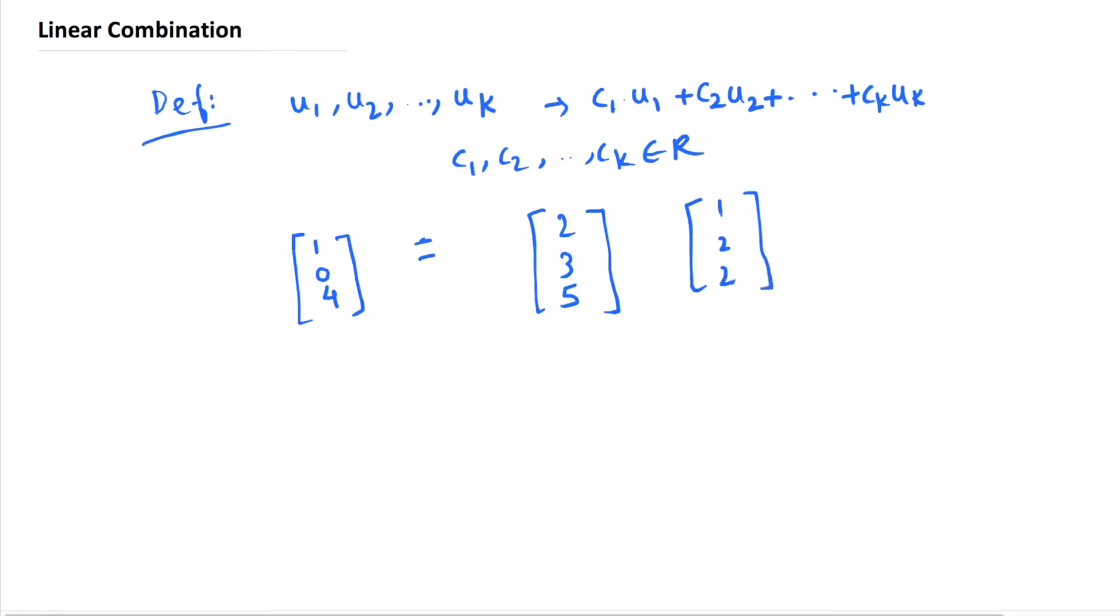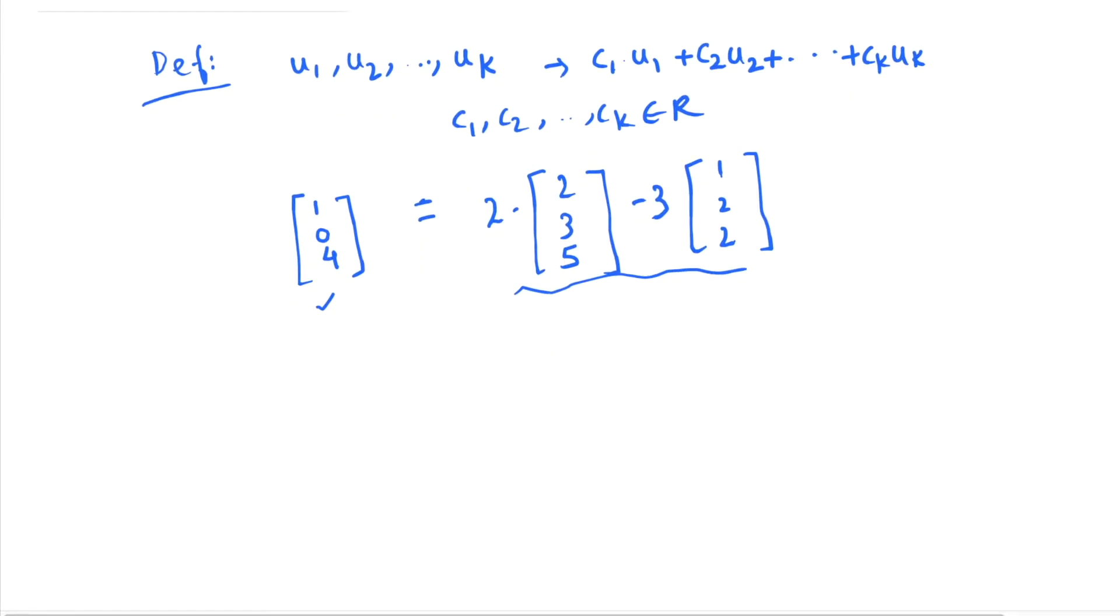And you can see why this is the case, because if you multiply 2 into the first vector and minus 3 into the second vector, you can see that this vector operation will result in this original vector [1, 0, 4].